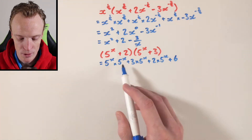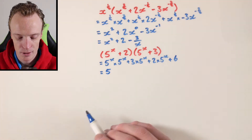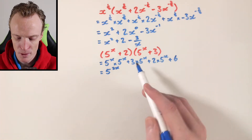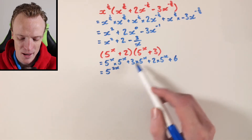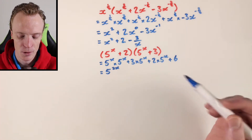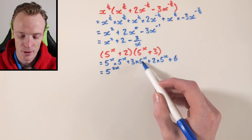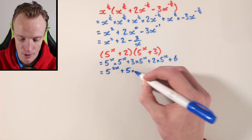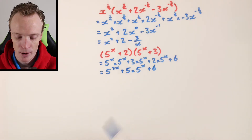Now let's use my index laws. I've got two indices with the same base, so I keep the base — 5 — the same and add the exponents: x plus x is 2x, so this will be 5 to the power of 2x. For the middle terms, if we consider 5 to the power of x as a single quantity, we've got three of them and two of them — that's five lots of 5 to the power of x. And then of course we've got add 6 at the end. I've simplified this as far as it can go.